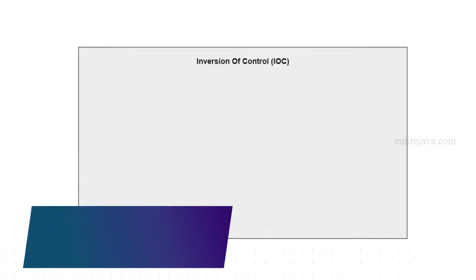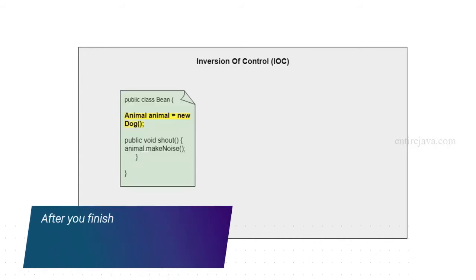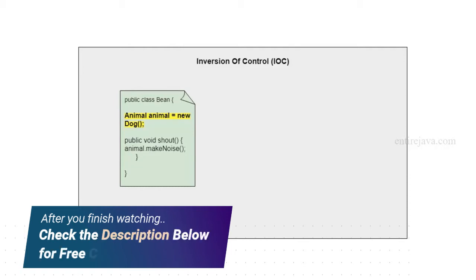Before we talked about dependency injection, we had our class within which we had defined its dependencies. So the class itself is managing its own dependencies, not by a third party tool. In other words, the class is controlling its own dependencies.